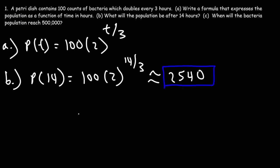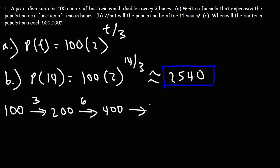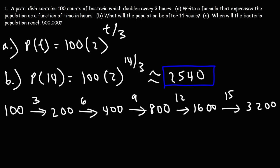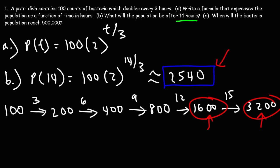Let's see if this answer makes sense. Initially we have 100 counts. After 3 hours it doubles to 200. After 6 hours, 400. After 9 hours, 800. After 12 hours, 1,600. After 15 hours, 3,200. We want the population after 14 hours. 14 is between 12 and 15, so the answer should be between 1,600 and 3,200. And 2,540 is between those two values, which means our answer makes a lot of sense.